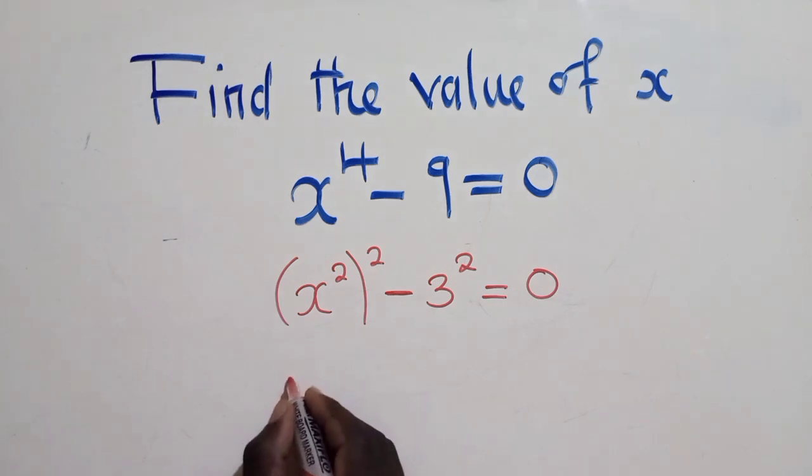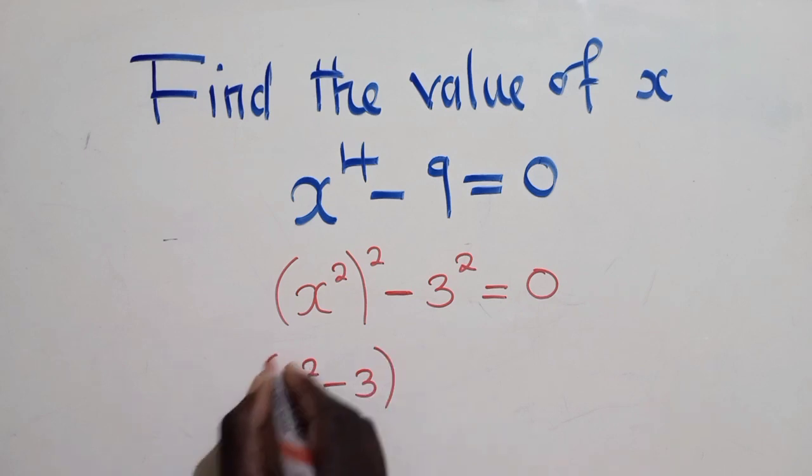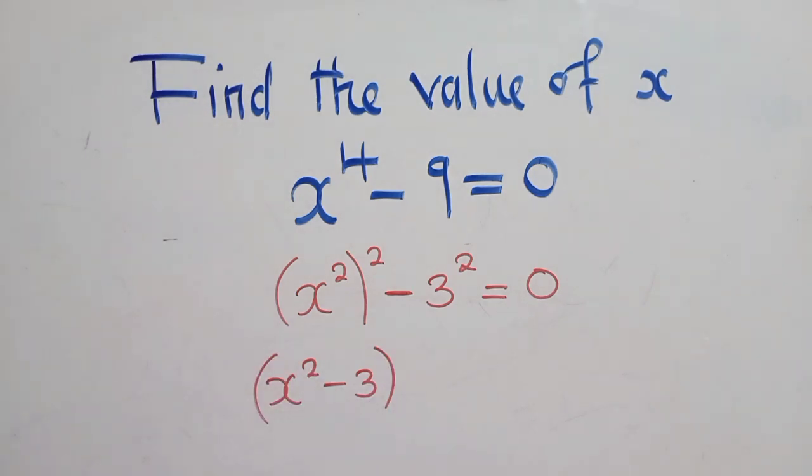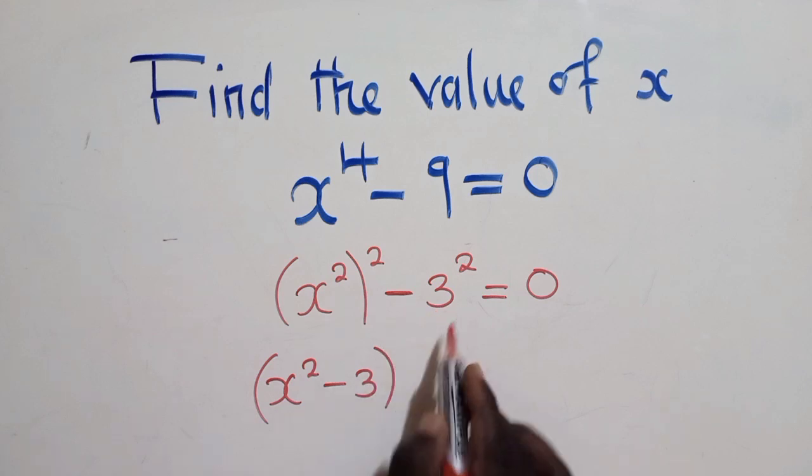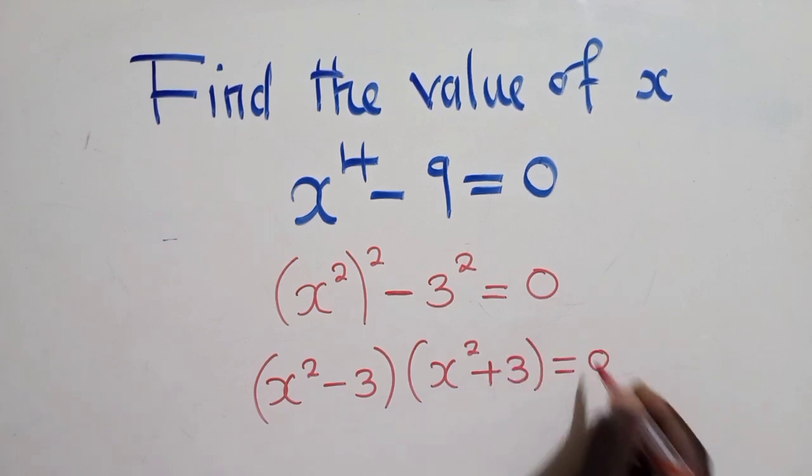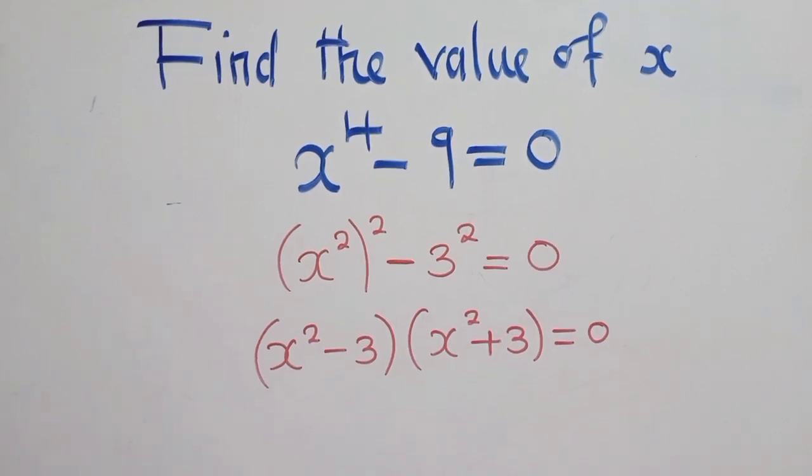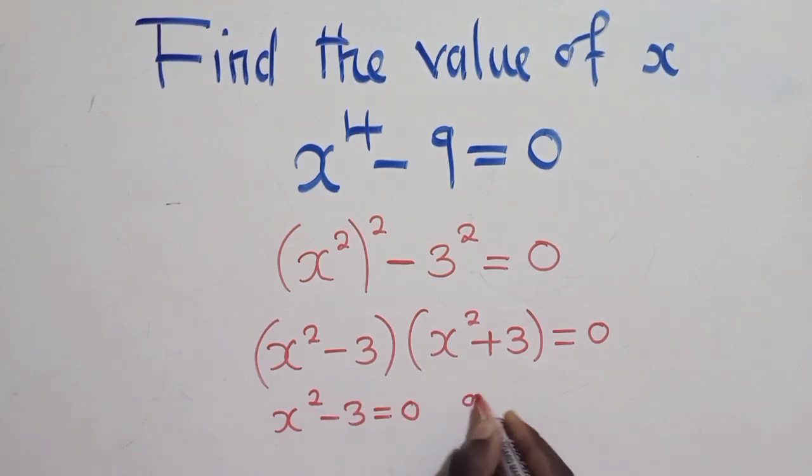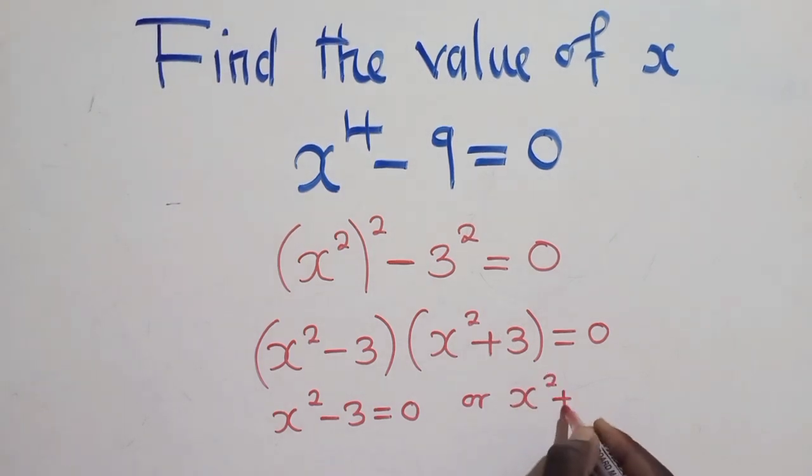So now from this stage, we can say x power 2 minus 3. Remember, difference of two squares. You get the base here minus the base here. The same thing. This time around, we put a plus, which is equal to 0. So when you do that, you come and say x power 2 minus 3 is equal to 0, or x power 2 plus 3 is also equal to 0.